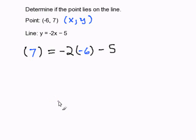Now I simply work out my problem. Negative 2 times negative 6 is positive 12. 12 minus 5 equals 7. And 7 equals 7. This checks out.